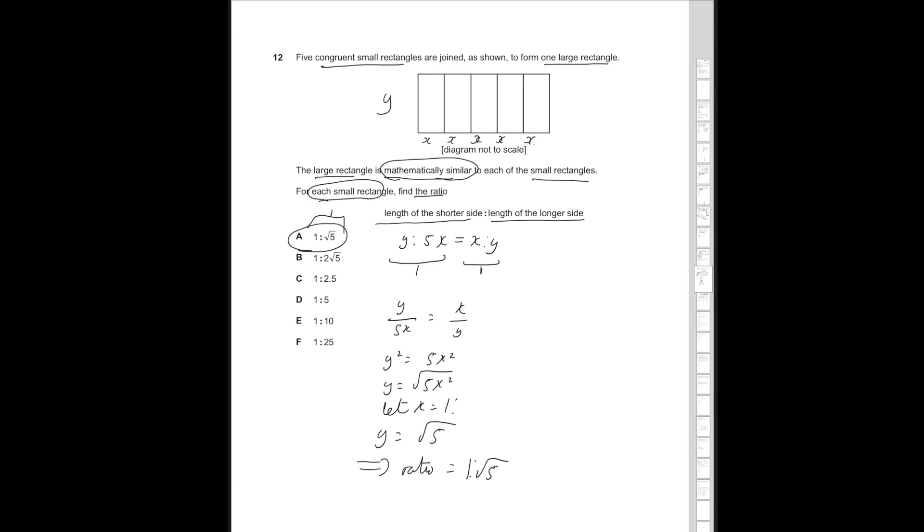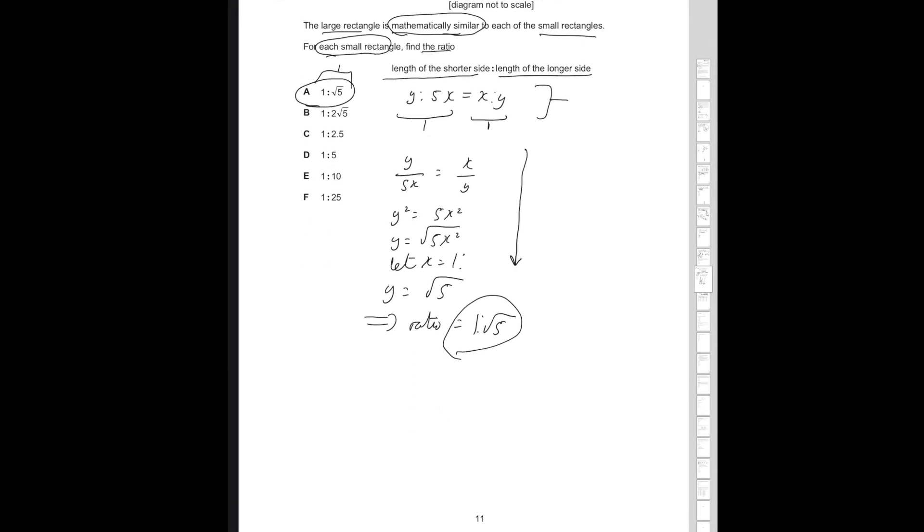Therefore, if we say that the short side is equal to 1, y is going to be equal to root 5. So the ratio is equal to 1 to root 5. And that's going to be answer option A. We use the laws of similarity to construct an equation in terms of ratios, convert it to fractions, then you put a sample value of x using the answers to the question as a guide, and then find the ratio using that sample value of x.